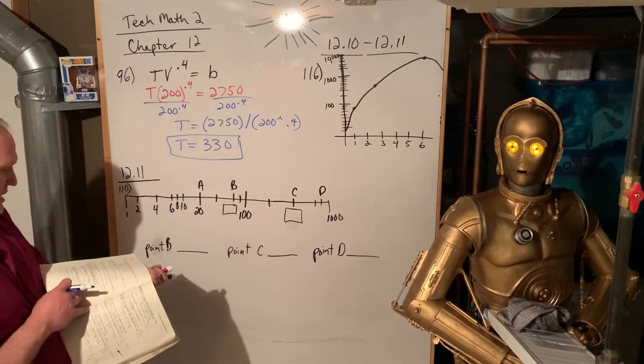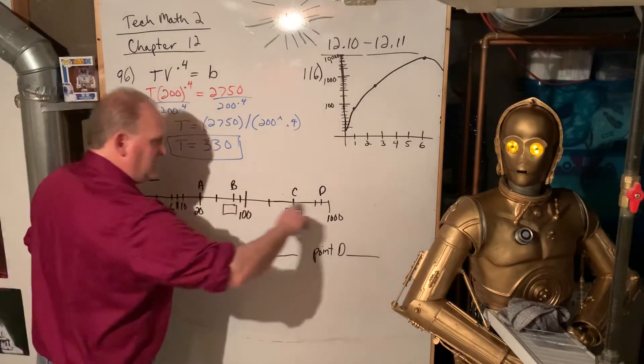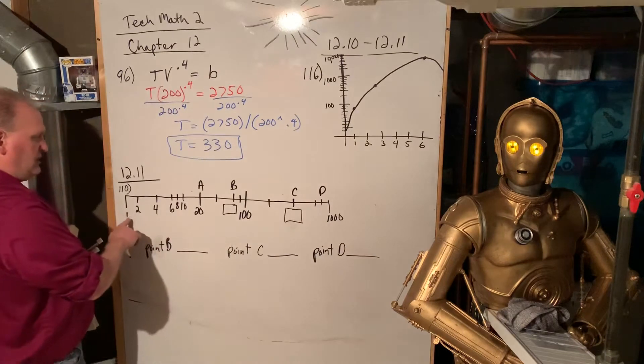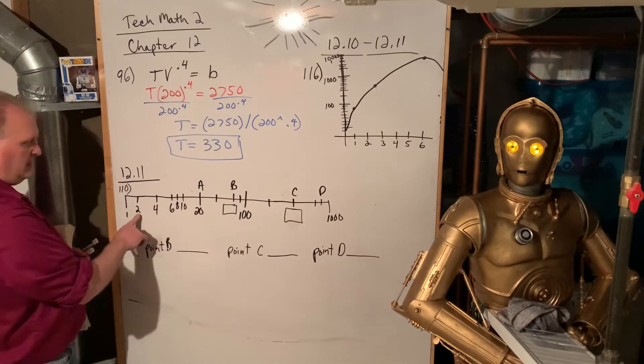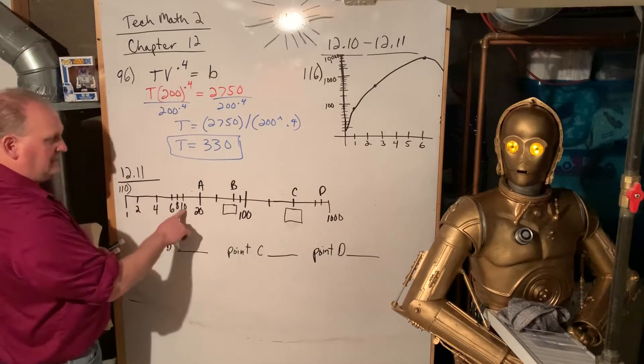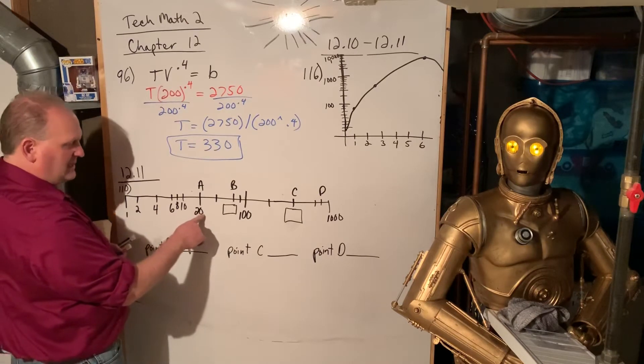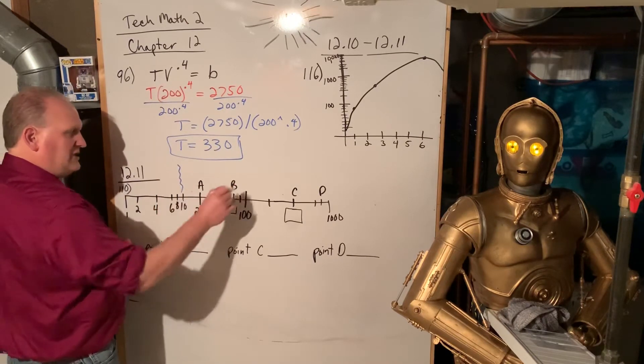And what happens with each little branch on the semi-log is it actually changes. Like this is going by twos, so this is one and then it goes two, four, six, eight, ten. But then the next line you see is 20, so it kind of changes.